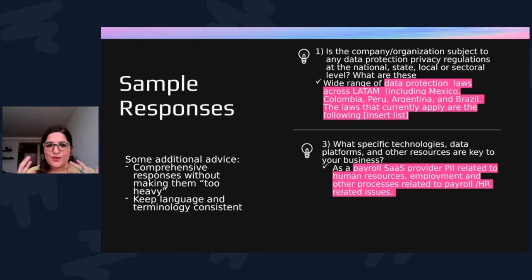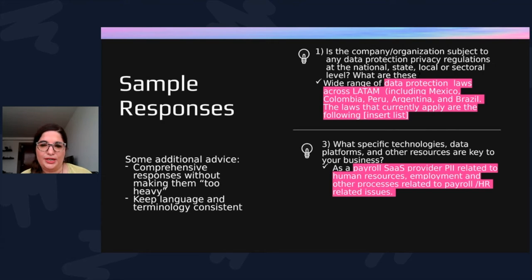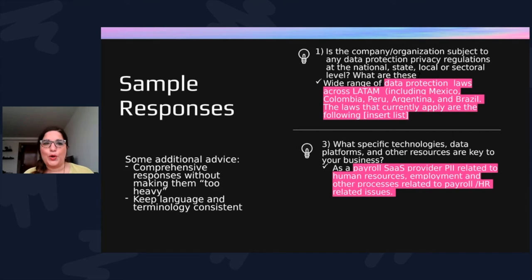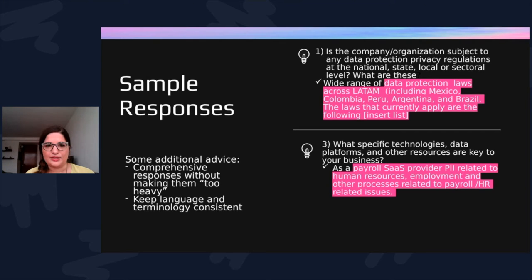The second question: what are the specific technologies, data platforms, and other resources key to your business? As a payroll software-as-a-service provider, my answer involves PII related to human resources, employment, and payroll-related processes. My keywords would be 'payroll,' 'software-as-a-service,' 'human resources,' and 'PII.' I would go through and circle these words, breaking them down because as I do that, I start seeing common terms — and I begin understanding what areas are covered: human resources means banking information, full names, and that sort of data.